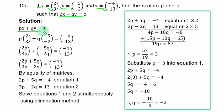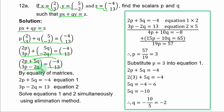By equality of matrices, 2p + 5q = -4 (equation 1) and 3p - 2q = 13 (equation 2). Solving simultaneously using elimination — multiply equation 1 by 2 and equation 2 by 5 to make the q-coefficients equal: 4p + 10q = -8 and 15p - 10q = 65. Adding: 19p = 57, so p = 3.